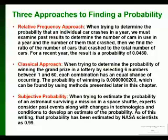When trying to estimate the probability of an astronaut surviving a mission in a space shuttle, experts consider past events along with changes in technologies and conditions to develop the estimate of probability. For example, I don't remember which one was the Challenger which blew up. It was fairly early in the shuttle program. What if the Challenger was the fourth shuttle sent up and it exploded midair? Would it make sense to say out of four shuttles, one of them blew up, therefore the chance of the next one blowing up is one out of four? The answer is no.